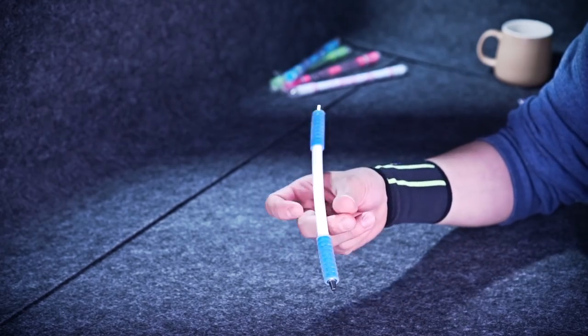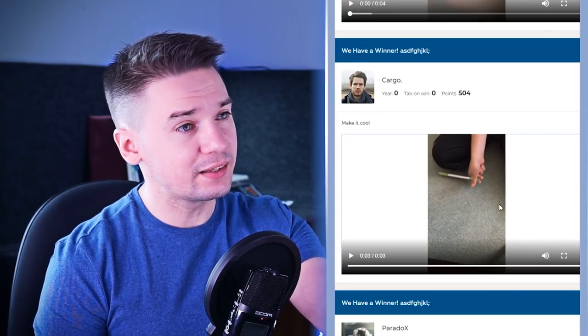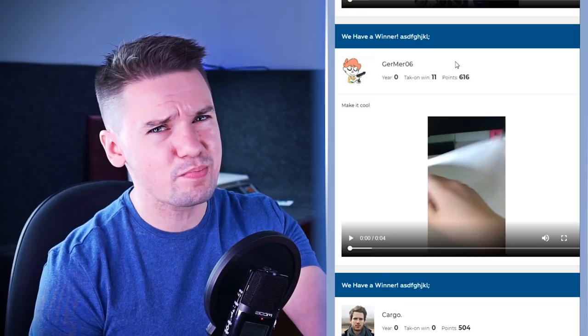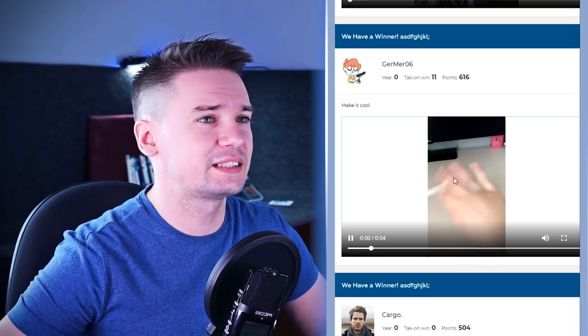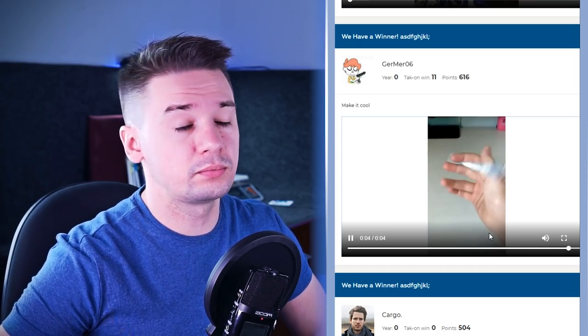By the way, this trick TA doesn't leave you a lot of ways to continue the combo. After it you can do Thumb Around Reverse or Fingerless Thumb Around Reverse. Germer 06 suggests to make New Sonic Reverse and it is also a good way to continue.